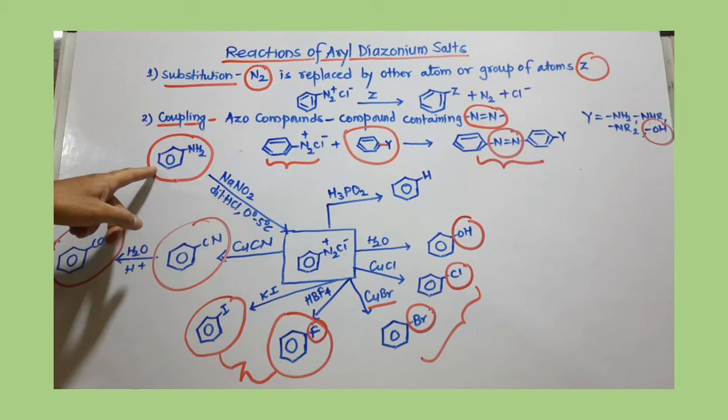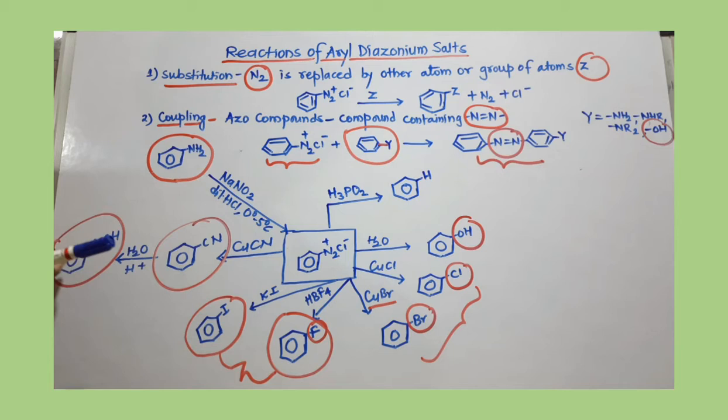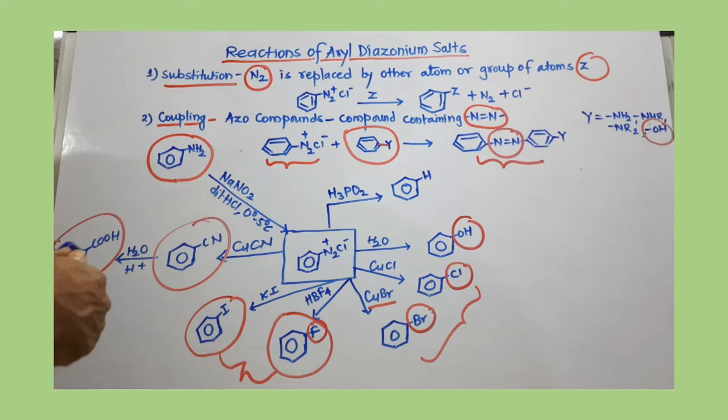This shows the importance of aryl diazonium salts. The NH₂ group is effectively replaced with a COOH group, and from benzoic acid you can prepare different carboxylic acid derivatives. You can also use hypophosphorous acid (H₃PO₂) to replace the NH₂ group with hydrogen, restoring the original aromatic ring — allowing you to remove any functional group.